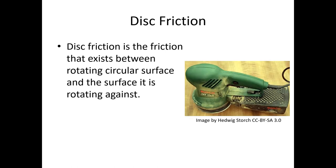An example of disk friction is what we would see in this orbital sander. The sanding disk itself is rotating against the surface which is not rotating. This occurs whenever we have relative motion. If one surface is sliding against another, we have the possibility of friction.